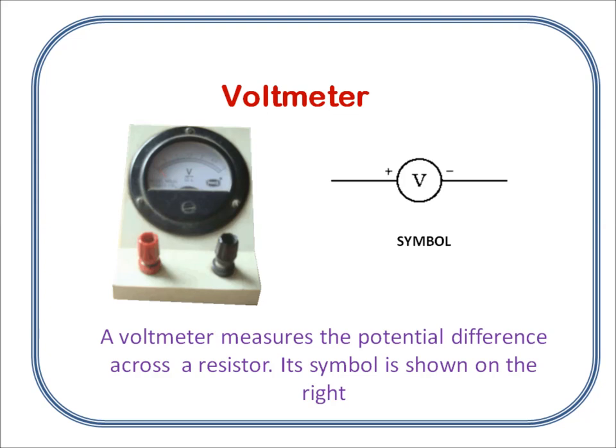A voltmeter measures the potential difference across a resistor. Its symbol is shown on the right.